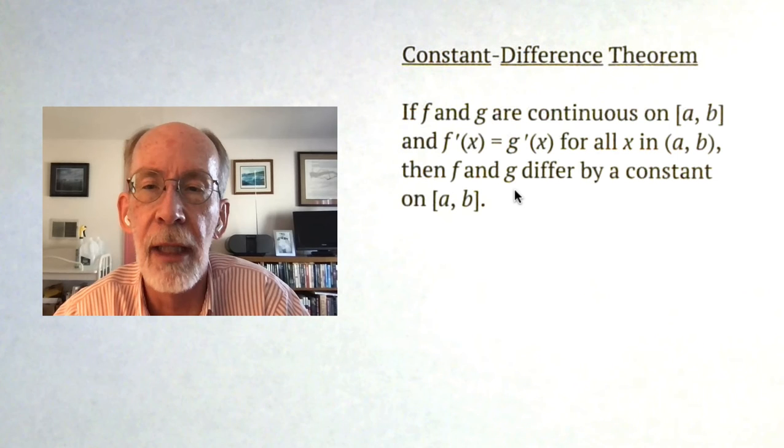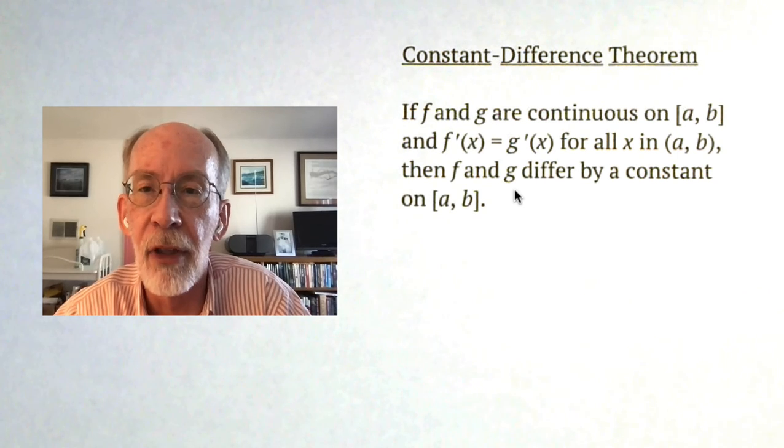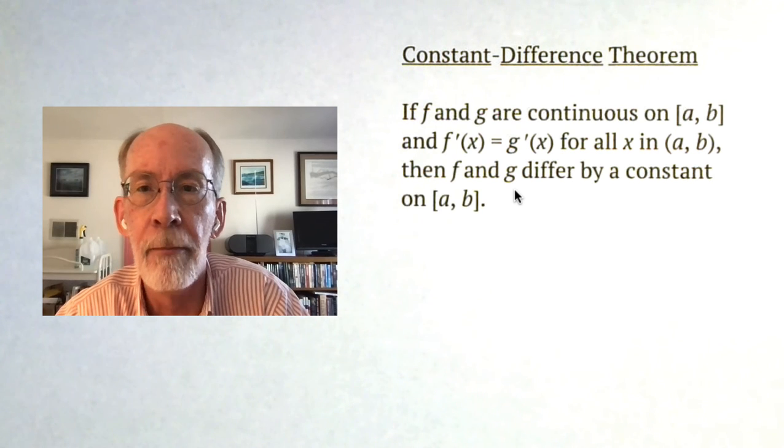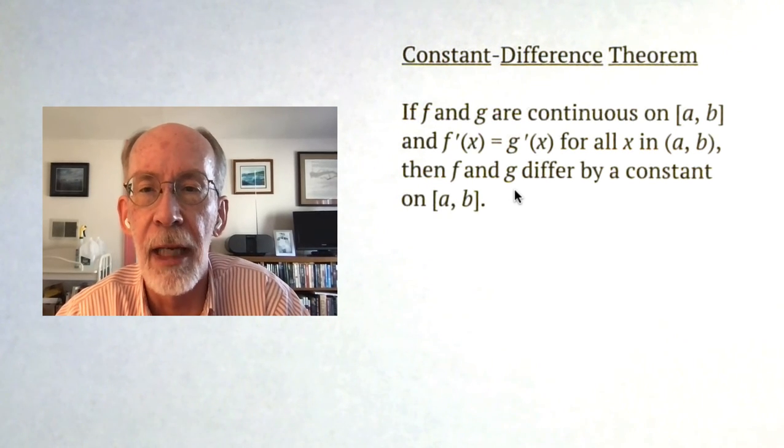It says, if f and g are continuous on closed AB, and if their derivatives, f prime and g prime, are equal for all x in the corresponding open AB, then f and g differ by a constant on closed AB.